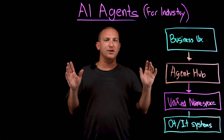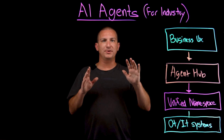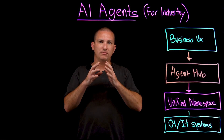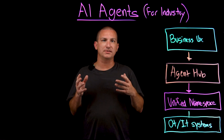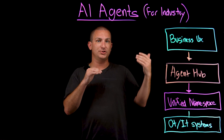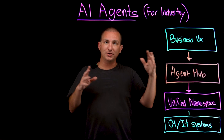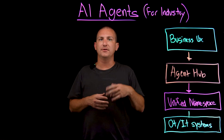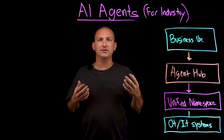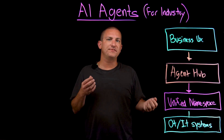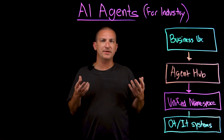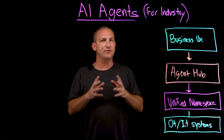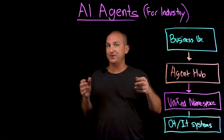Two more traps to watch out for. Number one: skipping advisory mode. Always start with the agent writing suggestions, not commands, and letting the stakeholder approve those suggestions. Let the humans bless or veto its choices until the metrics prove it's safe. Number two: neglecting continuous evaluation. Feed the agent synthetic test messages every day. If it drifts, you'll spot it before production does.